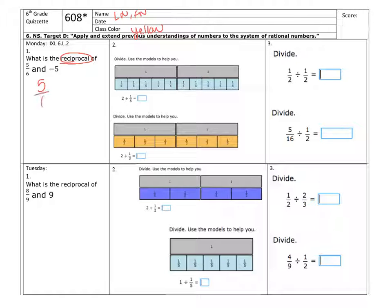So the reciprocal of 5/6 is 6 fifths. And in turn, the reciprocal of negative 5 is—so I always have to write the fraction out. So I'd put a 1 under negative 5, because technically, if it's an integer, it has a 1 underneath.